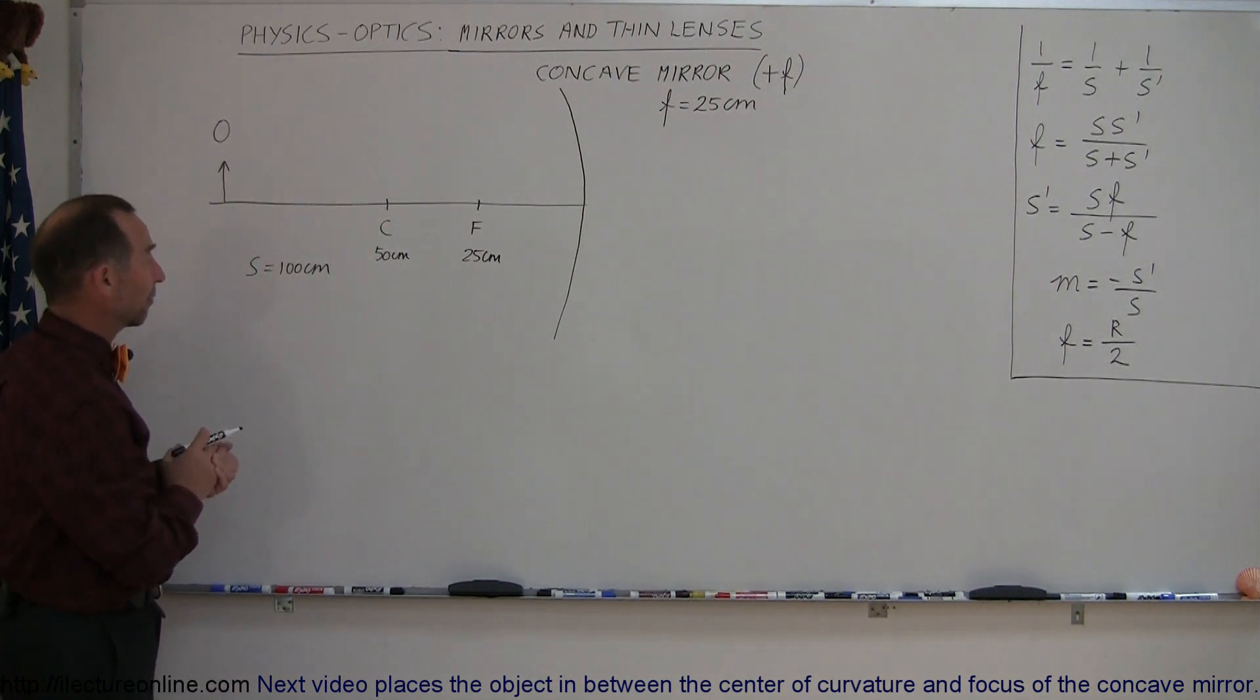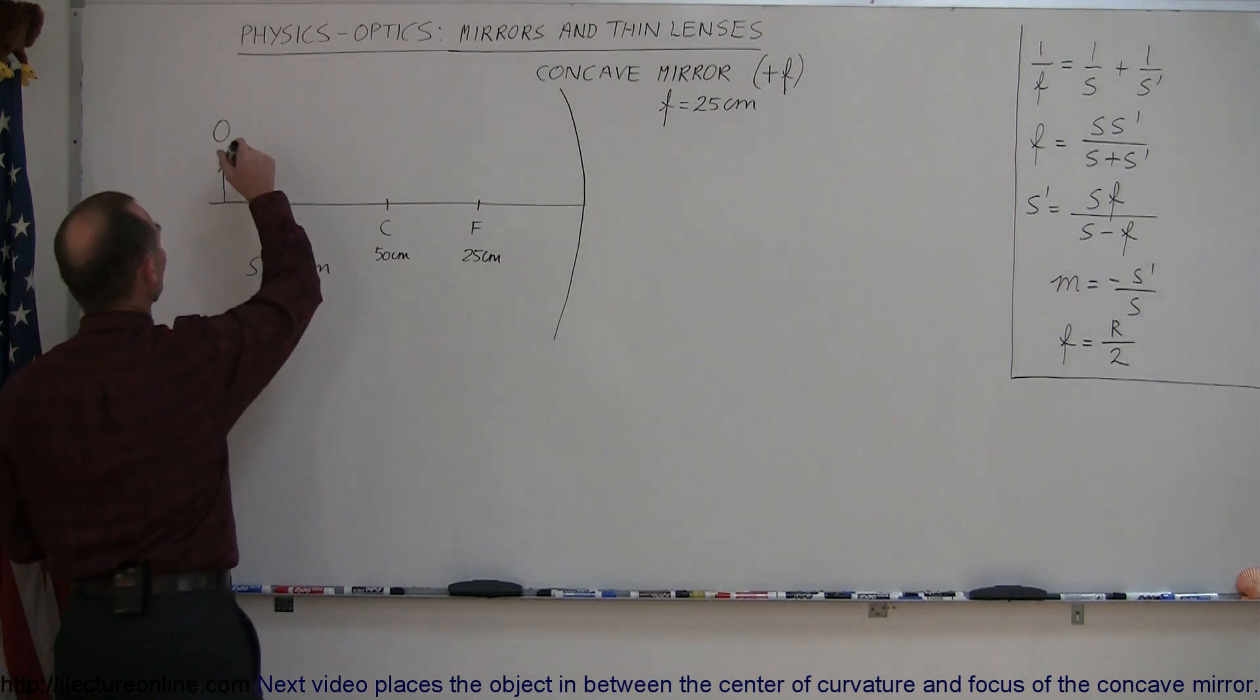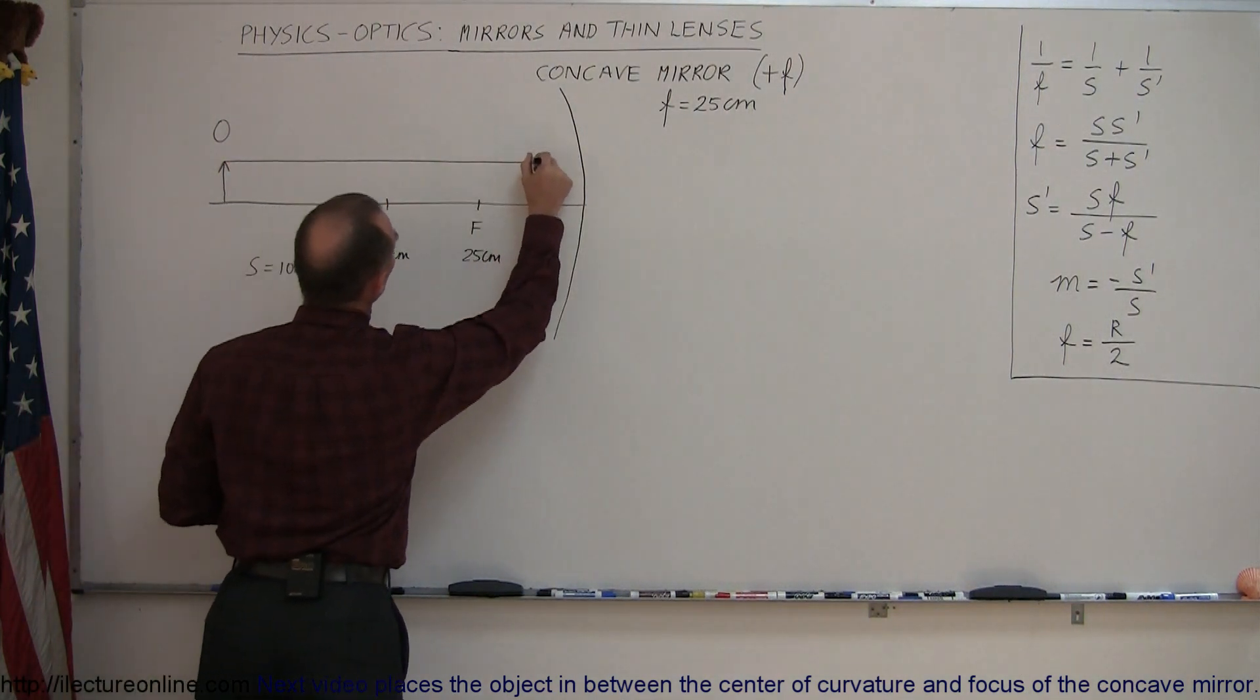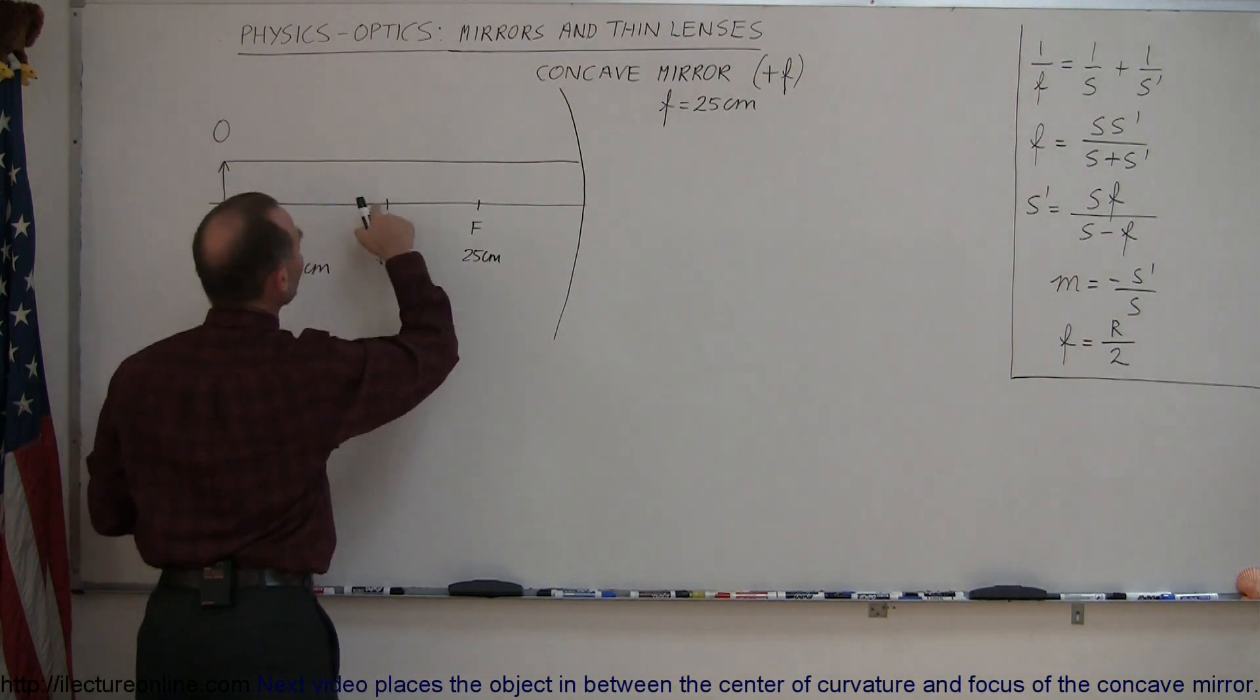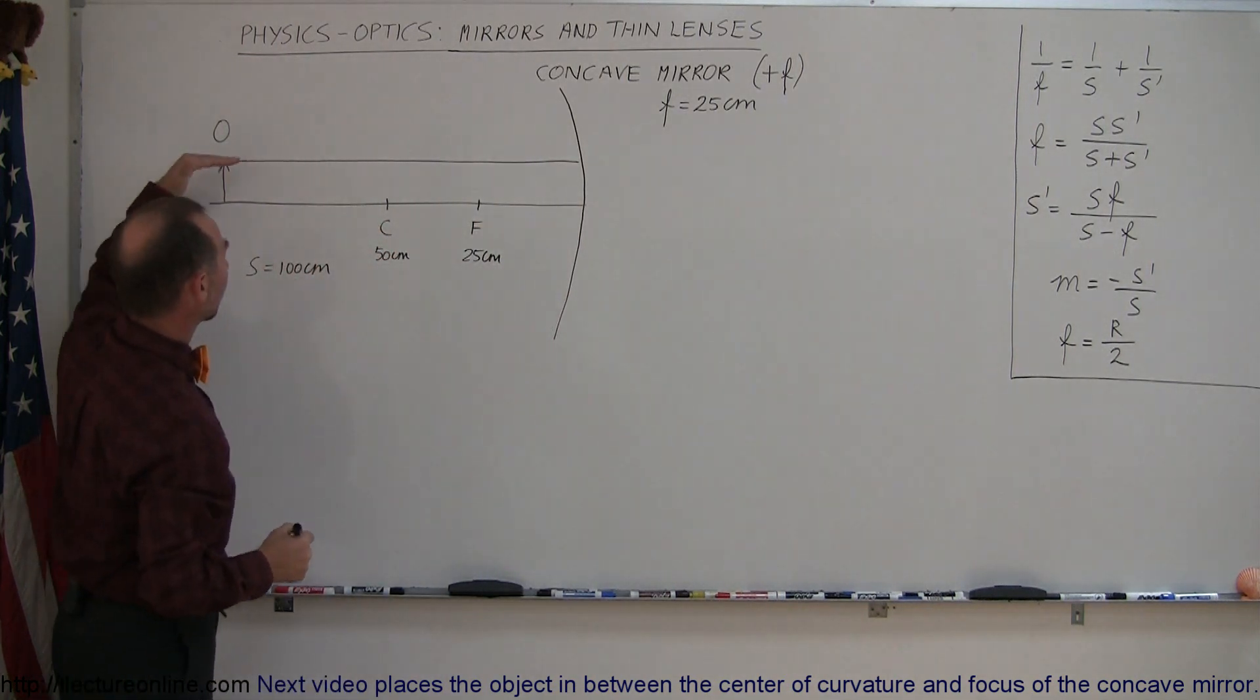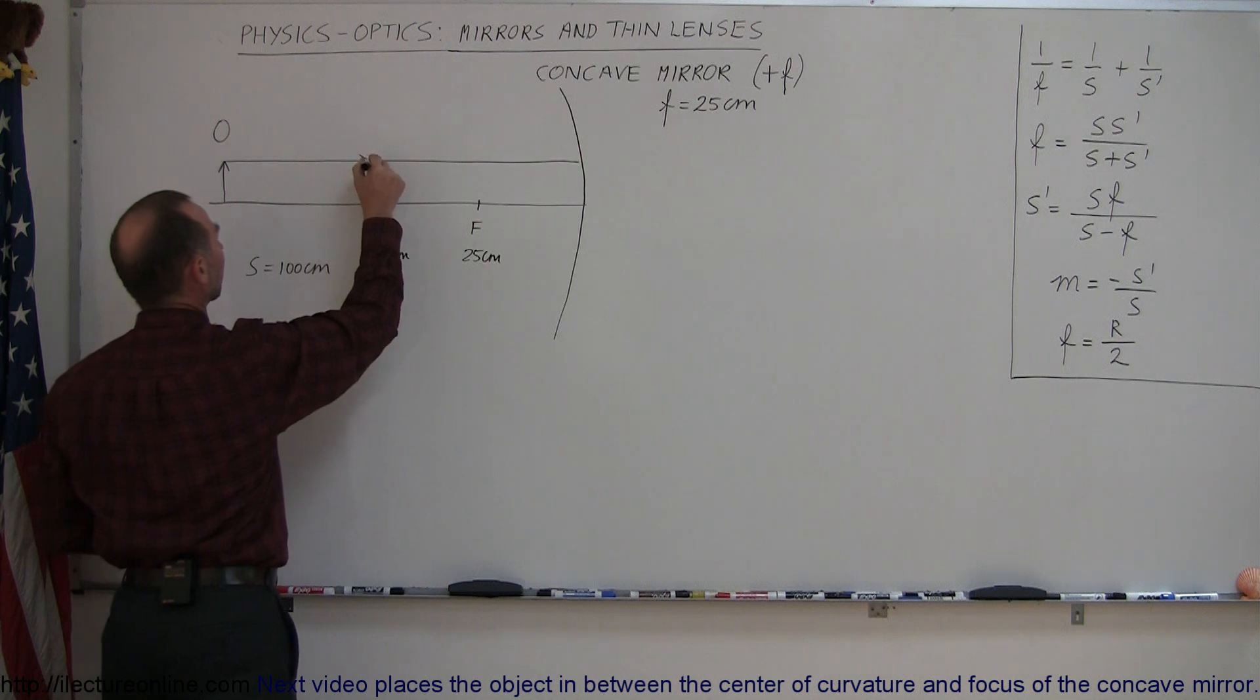First, we're going to find it graphically, and we can do that by drawing light rays, starting from the very top of the object. We draw a ray that's parallel to the normal. The normal is the line that is perpendicular to the surface of the mirror at the middle of the mirror. So the first ray that we draw is parallel to that normal.